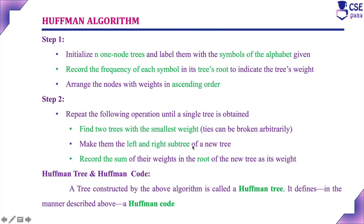So, what is the Huffman algorithm? First step: initialize n one-node trees and label the symbols of the alphabet given. Then record the frequency of each symbol in its tree's root. Then arrange the nodes with frequencies or weights in ascending order. Step two: repeat the following operation until a single tree is obtained — find two subtrees with the smallest weight, make them the left and right subtree of a new tree, and record the sum in the root. These steps you repeat until you get a single tree, which is called the Huffman tree, and the codes created in this manner are called Huffman codes.